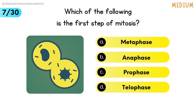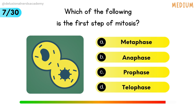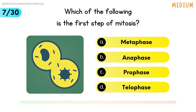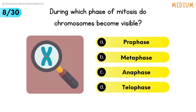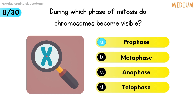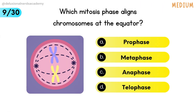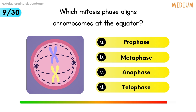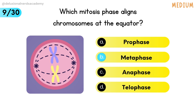Which of the following is the first step of mitosis? Prophase is the correct option. During which phase of mitosis do chromosomes become visible? In prophase, chromosomes become visible. Which mitosis phase aligns chromosomes at the equator? Metaphase is the answer.